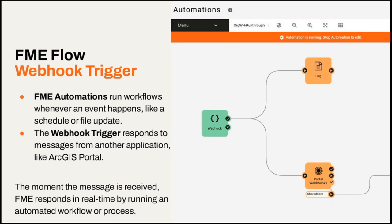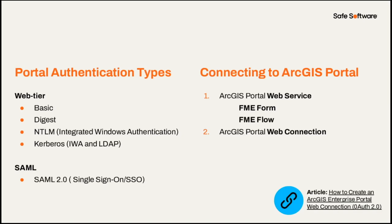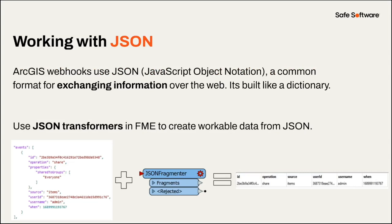When these events happen in Portal, ArcGIS pushes a message to FME Flow, received by an automation. A webhook trigger receives that message and in response the automation runs any type of workflow with the content. Once webhook data is ingested into an FME workspace, tools you might use include a native reader and writer for hosted datasets, a connector for managing items, and the HTTP Caller that can automate almost all other actions. You'll need a web connection configured for both your portal instance on FME Form and Flow. While working with web formats you'll run into JSON — we have an arsenal of transformers for turning this text into manageable data.